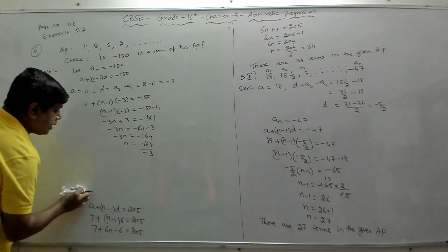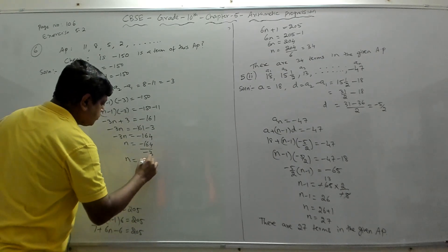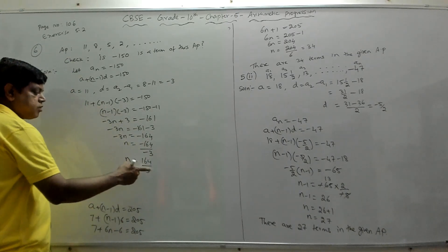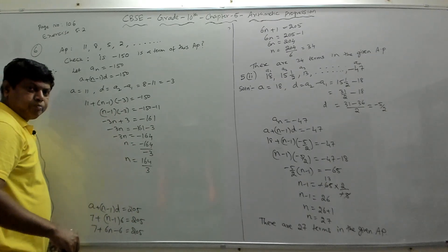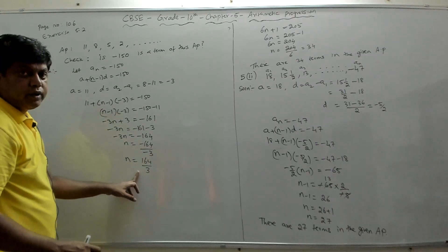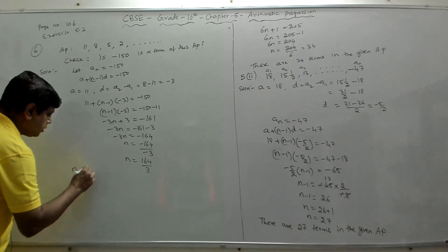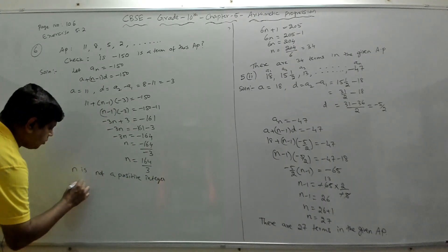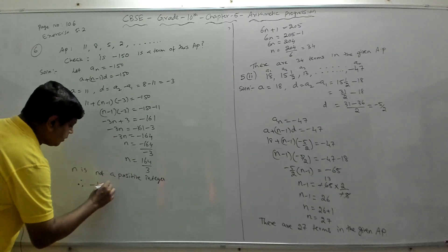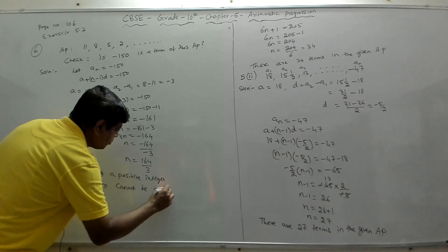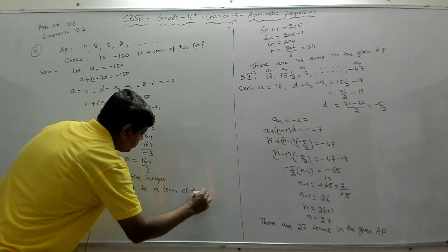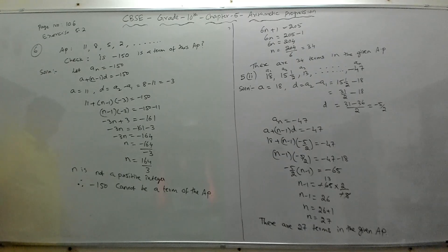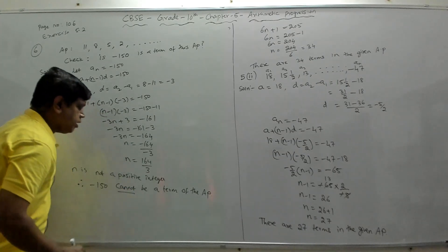Now 164 ÷ 3: the sum of digits is 1+6+4 = 11, which is not divisible by 3, so 164/3 is not a whole number. Since n is a fraction, it is not a positive integer. Therefore, −150 cannot be a term of the given AP.